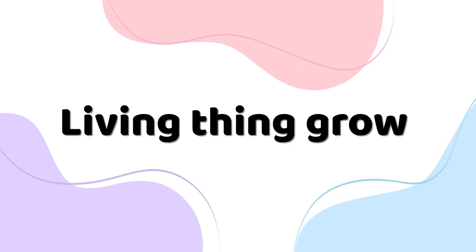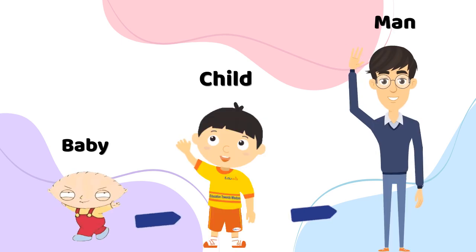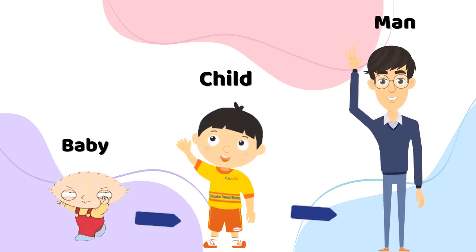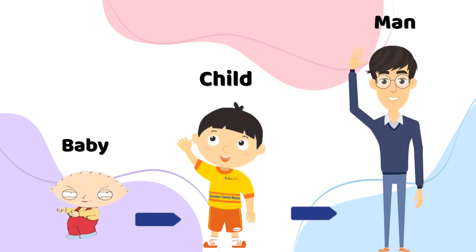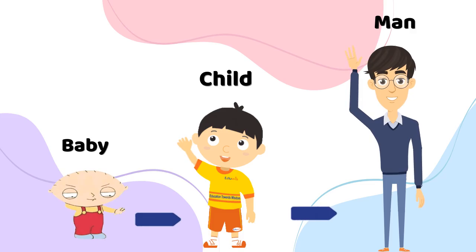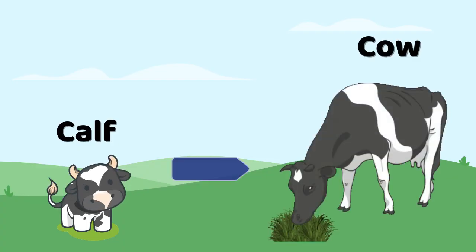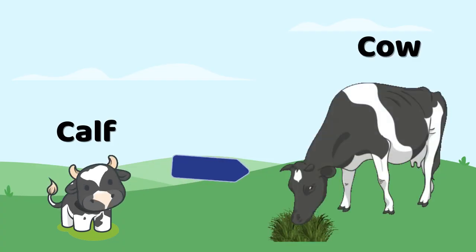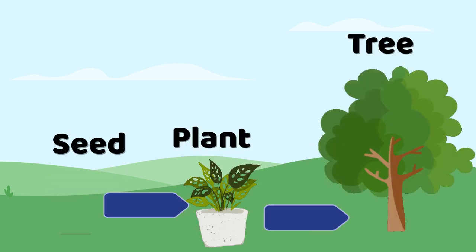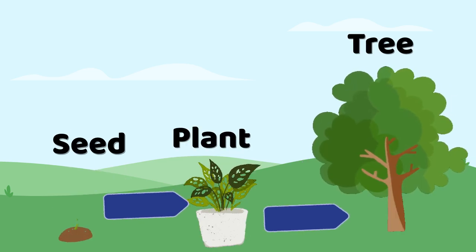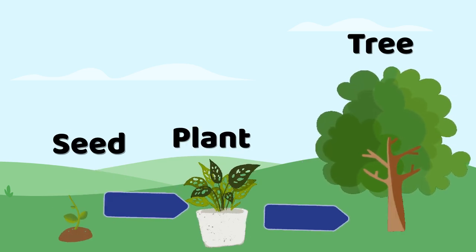Living things grow. A baby grows into a child, which then grows into a man. A calf grows into a cow. A seed grows into a plant, which then grows into a huge tree.